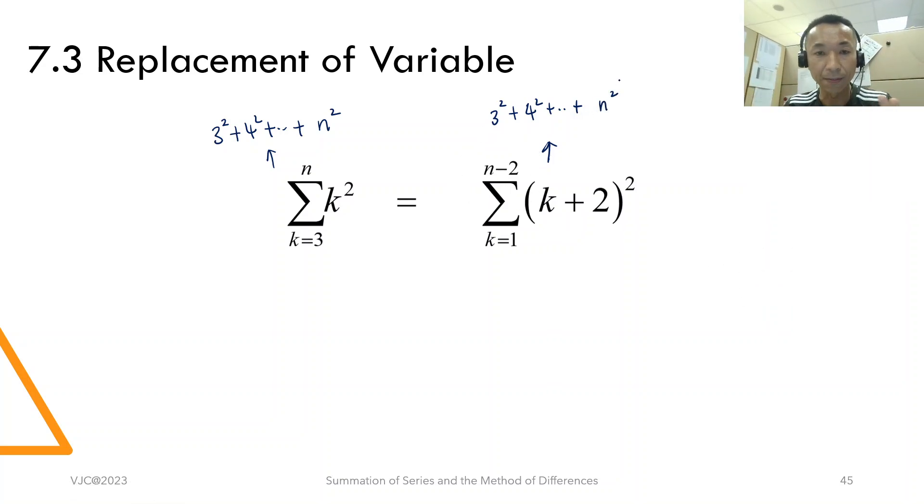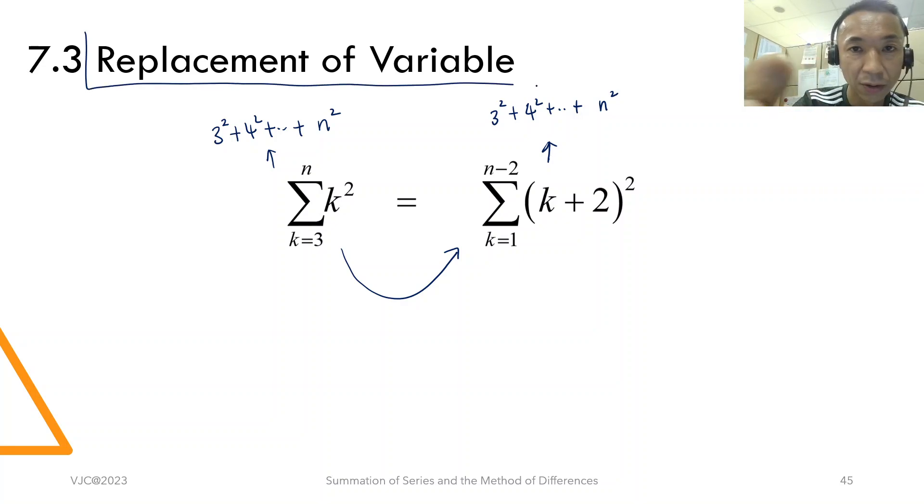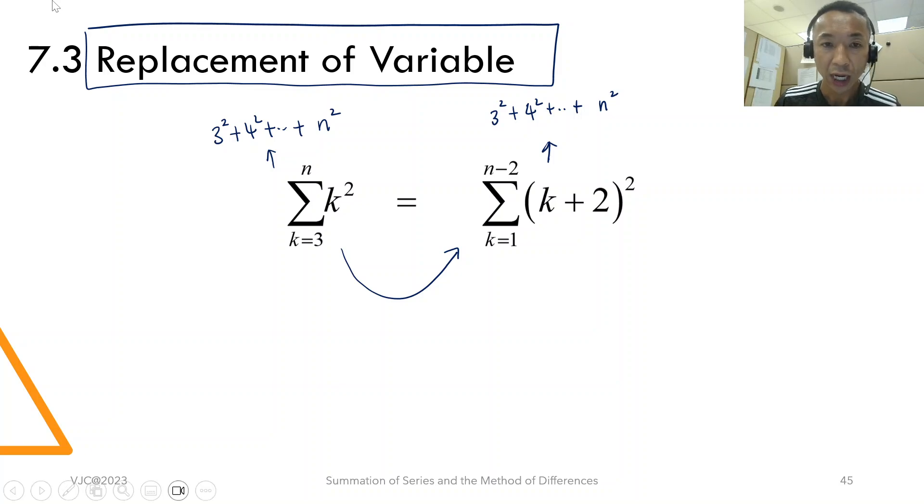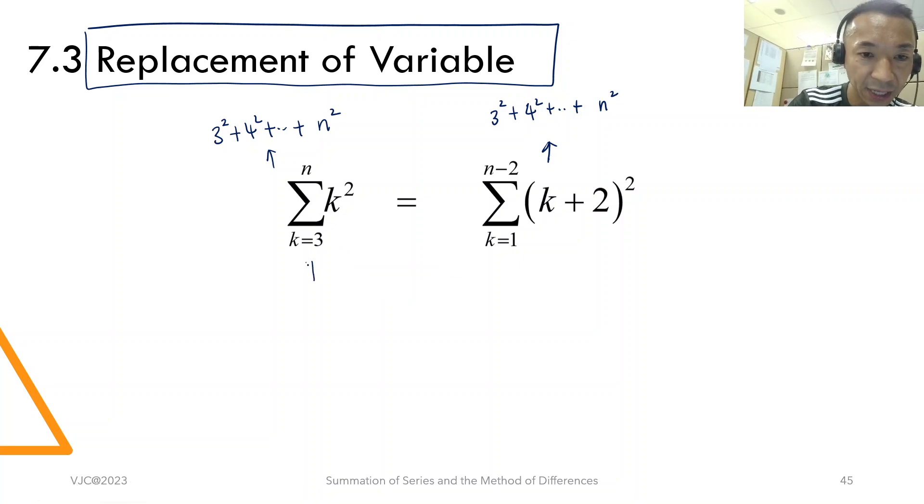So I can safely say these two are the same. But how do we get from here to here by using this idea of replacement of variable? It's very simple. Look, this is k. Can I safely say this one, whether it is k or j, actually, it's the same.